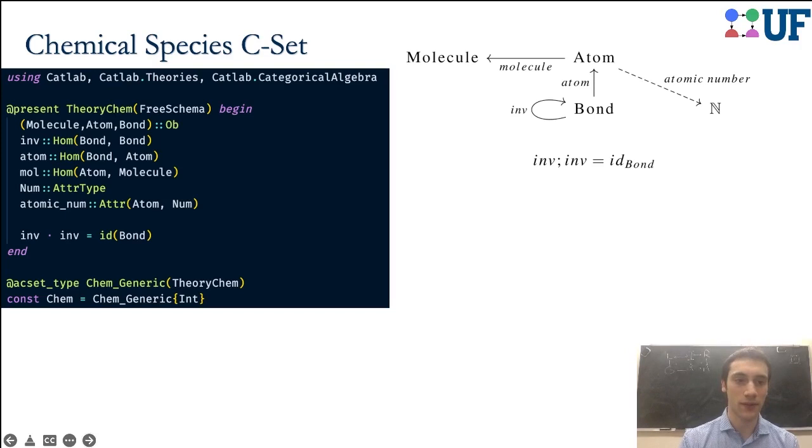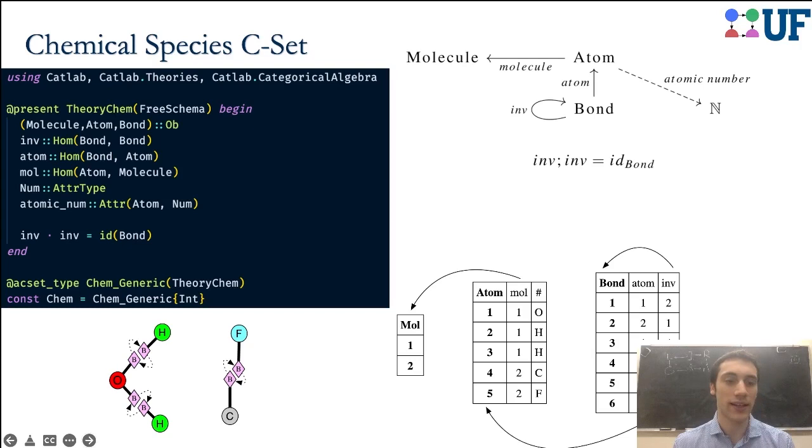The code is shown here on the left, which is how you would declare this data structure in Catlab, and then create the data type. Let's think about how we would represent a water molecule and a carbon-fluorine bond. This might be a good pattern for a reaction because this water molecule might want to replace the fluorine with a hydrogen. To make this the pattern of a rewrite rule, all we need to do is create this database instance, which effectively encodes this pattern that we see here. It's very easy to create these things.